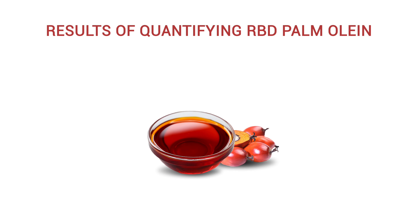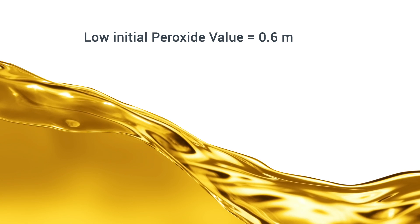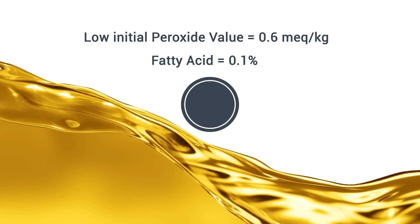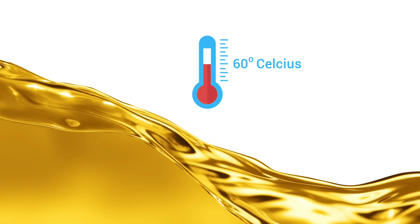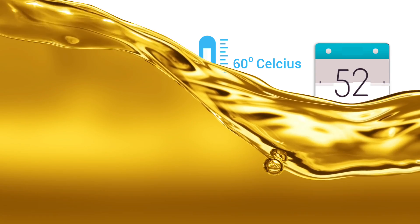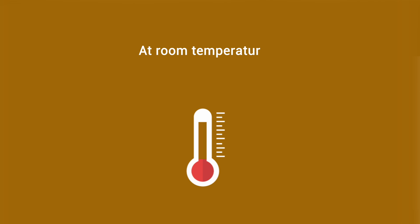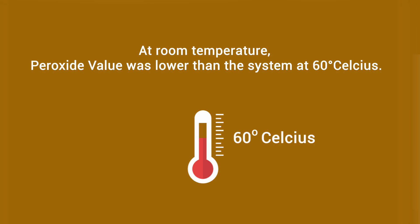Looking at the results of quantifying RBD palm oil: a low initial peroxide value of 0.6 milliequivalents per kilogram and free fatty acid of 0.1% indicated the high quality of the oil. At 60 degrees Celsius, the formation of peroxides increased rapidly from day 0 to day 52. At room temperature, the peroxide value was lower than in the 60 degrees Celsius system.